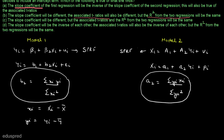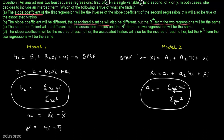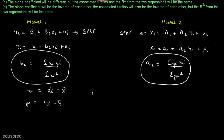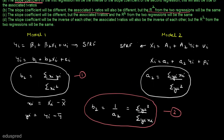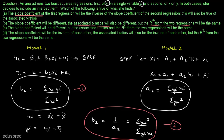Let's examine the answer choices regarding these two slope coefficients. Part A states that the slope coefficient of the first regression will be the inverse of the slope coefficient of the second regression, meaning b2 = 1/a2, which would require b2 = summation(yi²)/summation(yi·xi). However, there is no reason to believe that our derived b2 equals this expression. So Part A cannot be the right answer. Similarly, Part D also claims the slopes are inverses of each other, so Part D is also eliminated. The answer is either Part B or Part C.